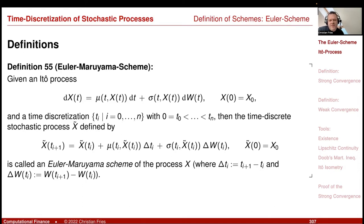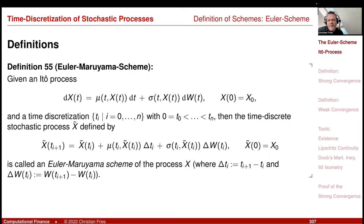The Euler scheme is often sufficient because we have the technique of transforming our state variable x to a different state variable y via Ito's lemma, then performing the discretization on that variable and transforming back. This technique is very powerful and can often reduce the discretization error a lot. So we should study the Euler scheme a little bit more.